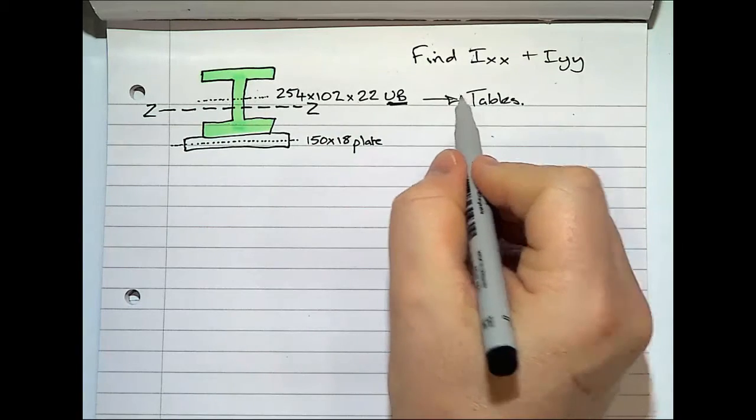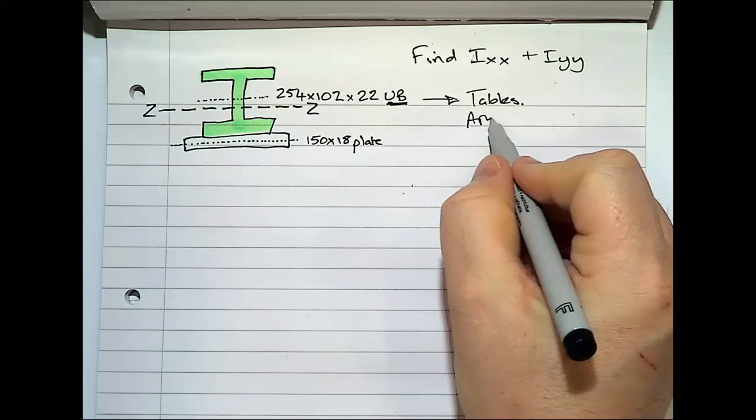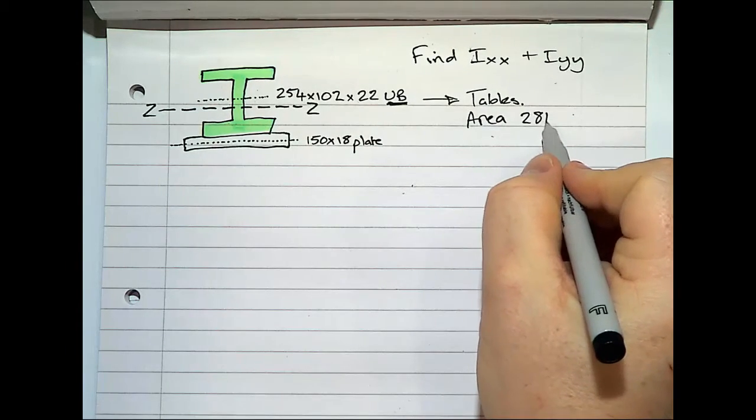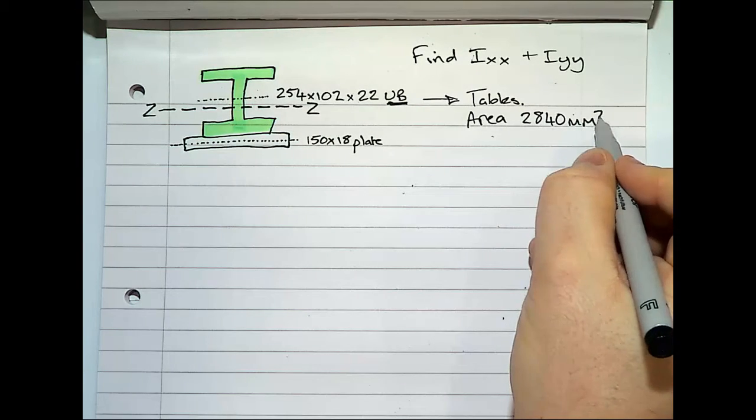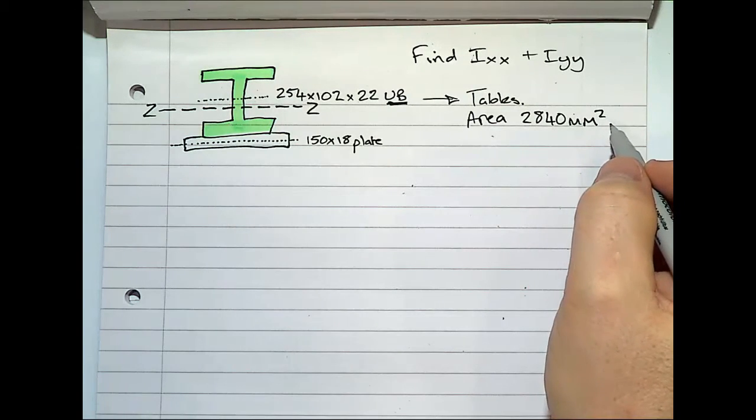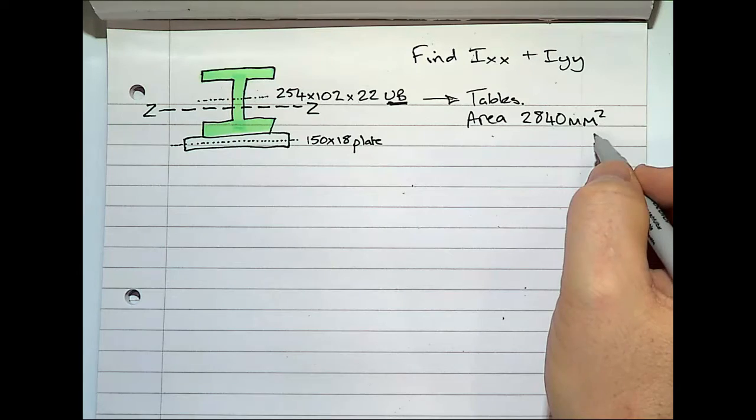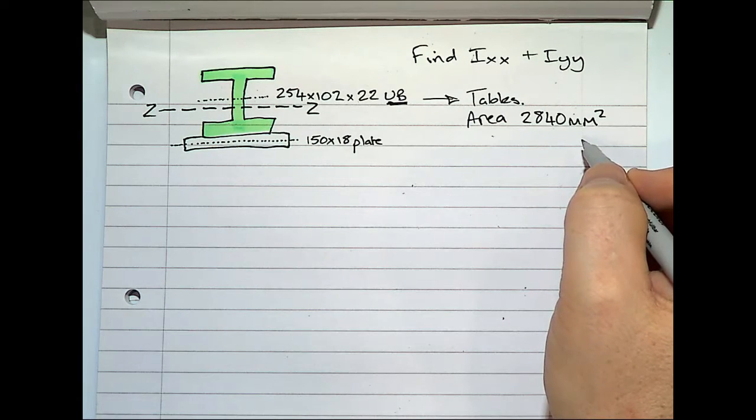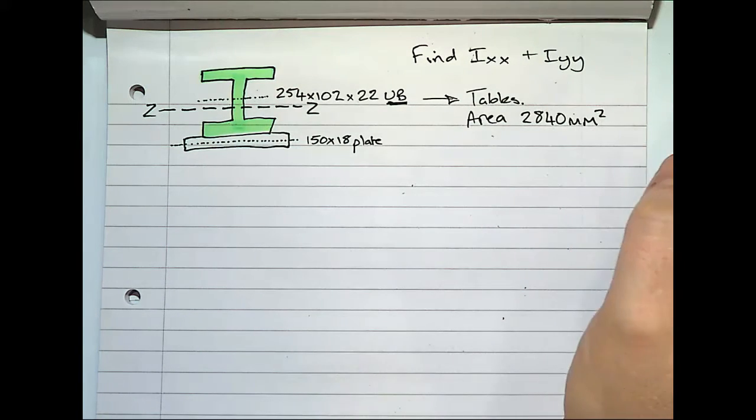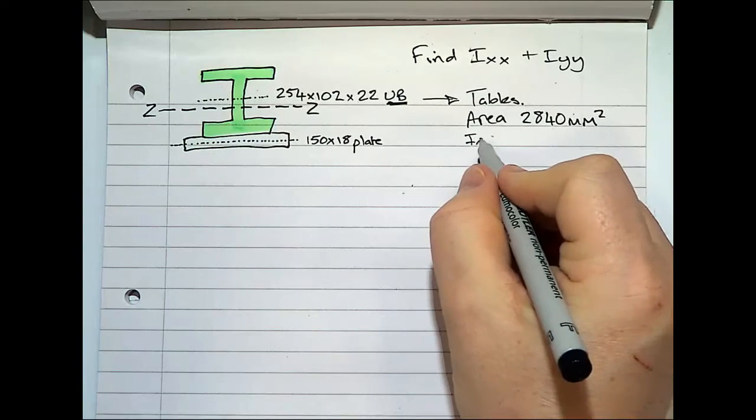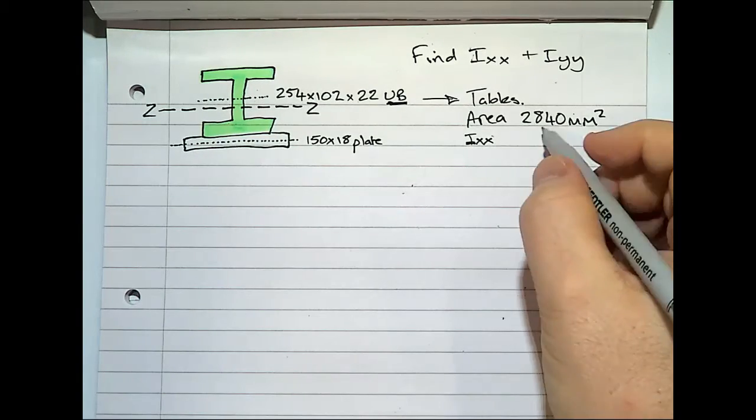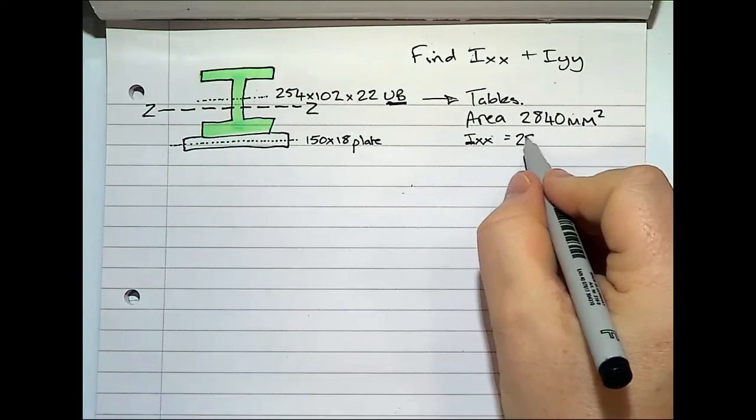From the tables, we can find out that the area is 2840 mm². You'll find that every company has the area in centimeters, so you have to change to millimeters all the time. Ixx is from the table.